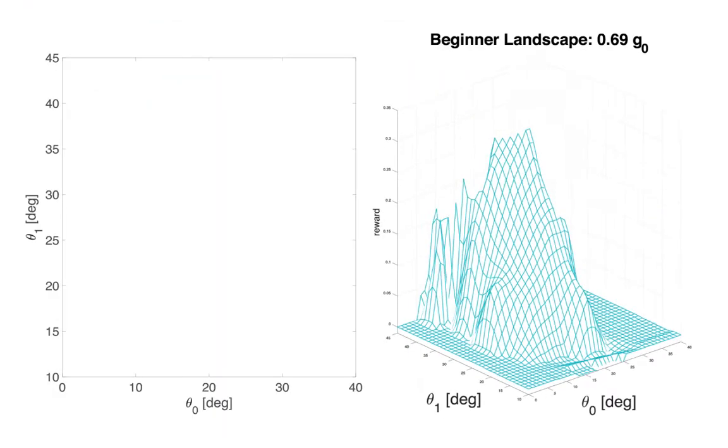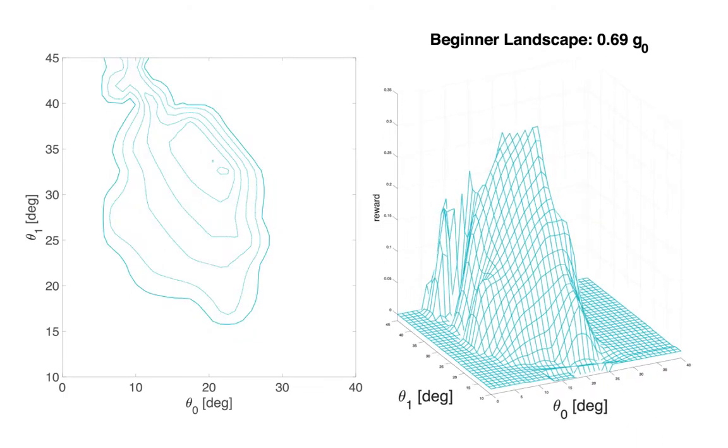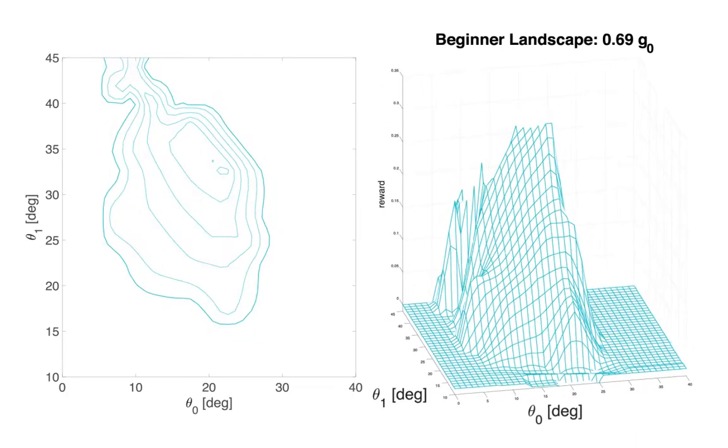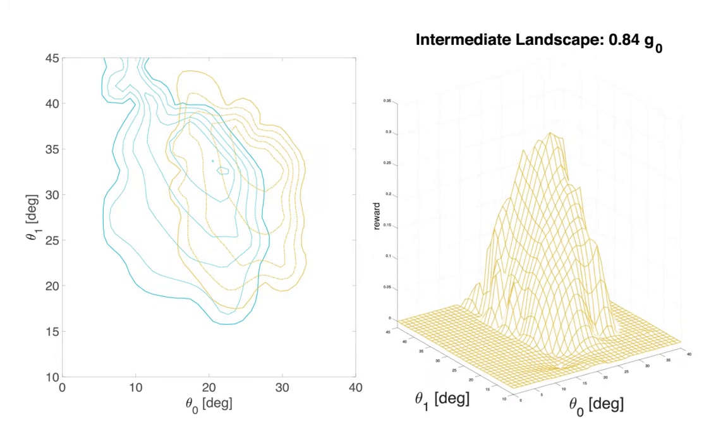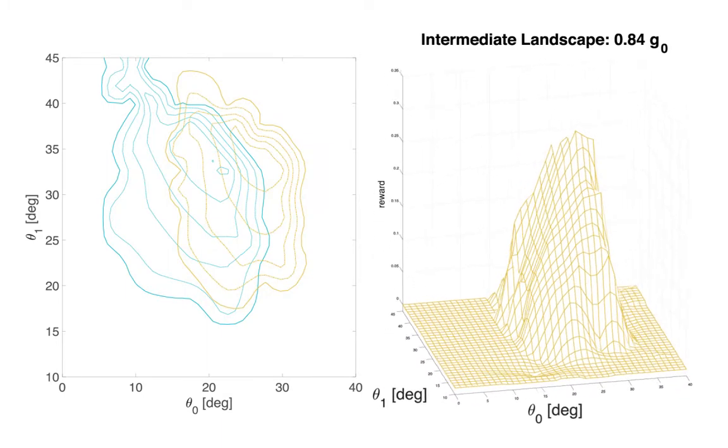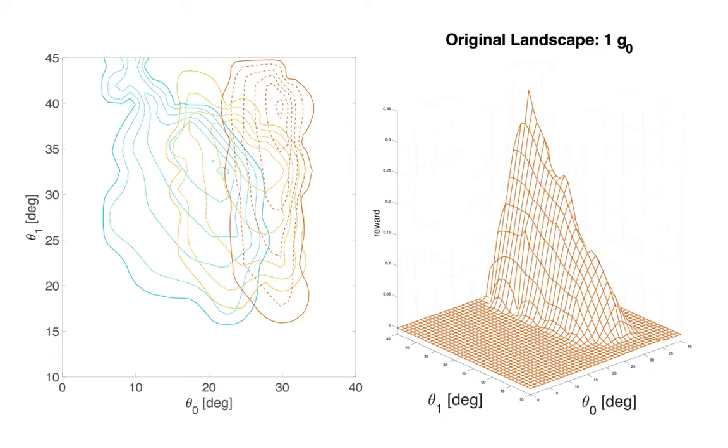We can quantify the reward landscape and directly observe how it changes with different amounts of reduced gravity. Of particular note, the area of the parameter space with a salient gradient gets larger with the training wheels.